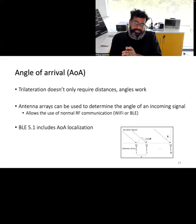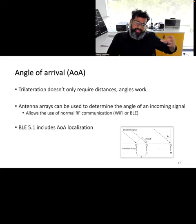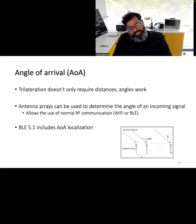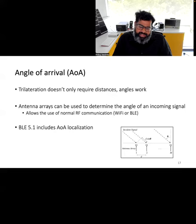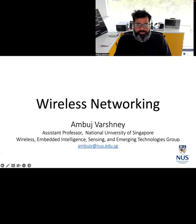Finally, instead of distance, we can use angle to estimate the location of a target device. This is called Angle of Arrival. With an antenna array — multiple antennas — you can estimate the angle at which wireless signals arrive to determine the distance of the target node from the anchor points. The precise details are beyond the scope of this course, but Angle of Arrival is increasingly important as Bluetooth's latest standard actually supports angle-of-arrival localization. With this, I will conclude this part of the lecture. Thank you very much.